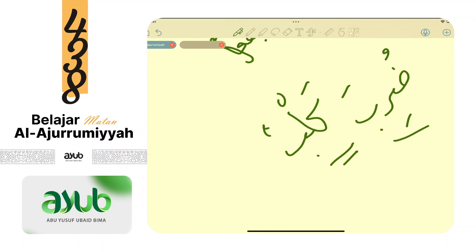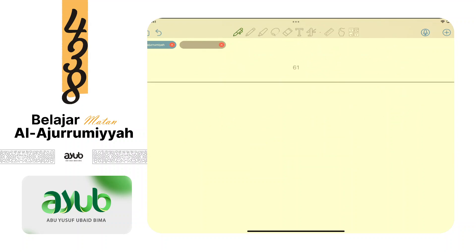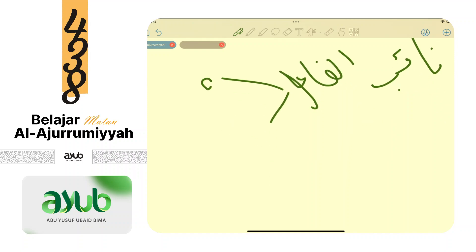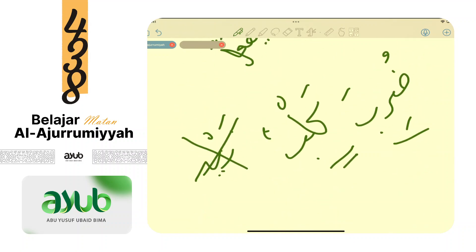Kalau ada na'ib fa'il pasti tidak ada fa'il - otomatis. Tidak boleh ketemu. Na'ib fa'il juga terbagi dua seperti fa'il: bisa dhohir, bisa domir. Contoh dhohir: duriba kalbun - ini na'ib fa'il dhohir karena bukan kata ganti. Contoh domir: duriba tu - tu sebagai na'ib fa'il berupa domir.